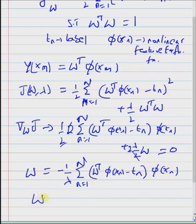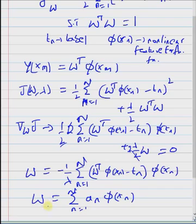That is, we can write w equals summation n equal to 1 to N of aₙ phi of xn. Note that aₙ is still a function of w, but w is just a linear combination of phi of xn where the aₙ's are scalars.